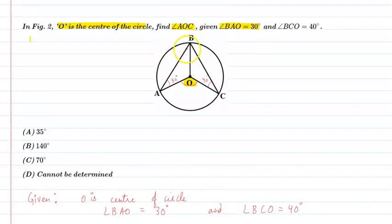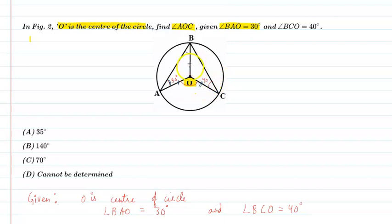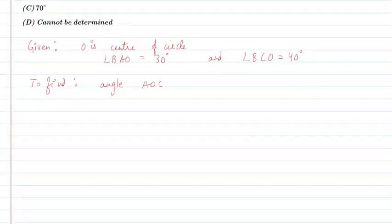In triangle AOB, AO is equal to OB because they are both radii of the circle. Therefore the angle opposite to equal sides are also equal. Similarly, OC equals OB equals OA, all being radii. So if angle BCO is 40 degrees then angle CBO is also 40, and if angle BAO is 30 degrees then angle ABO is also 30 degrees.